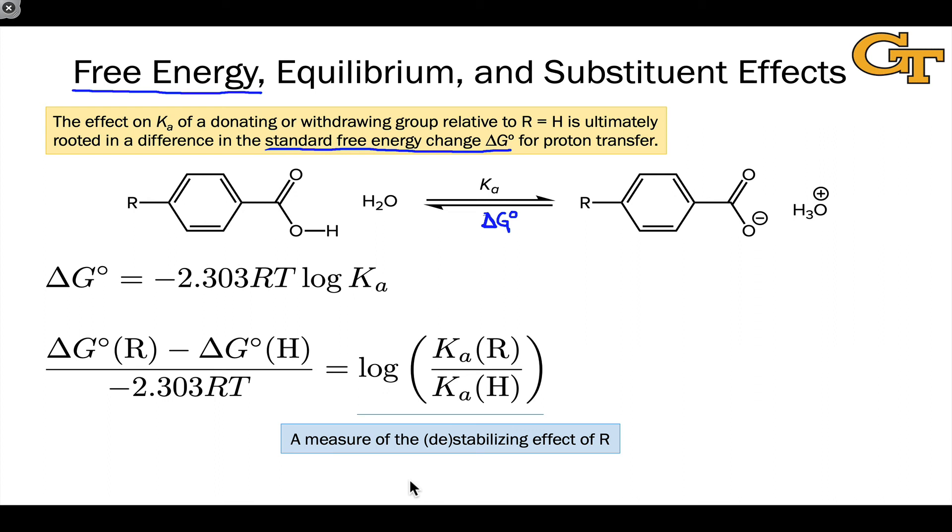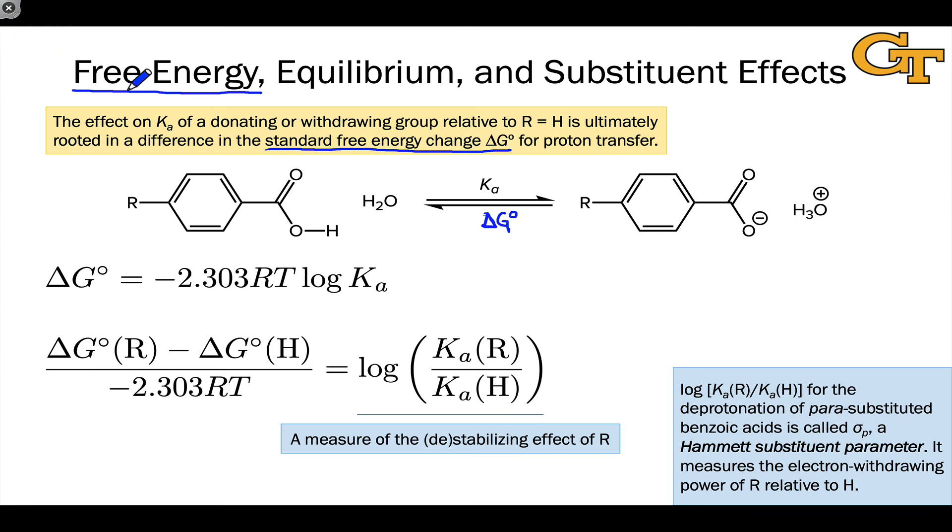So this logarithm of a ratio is a measure of the destabilizing effect or stabilizing effect of the R group, depending on whether it turns out negative or positive. This logarithm of the ratio of the equilibrium constants is exactly what we call a Hammett substituent parameter. It captures in a very human-friendly form the impact of a substituent in terms of stabilizing or destabilizing an intermediate in some reaction.